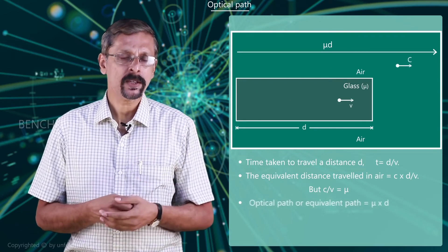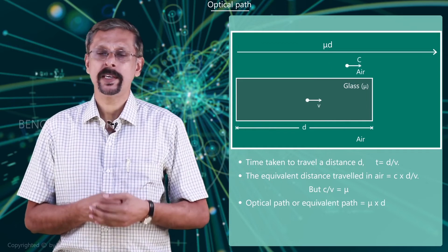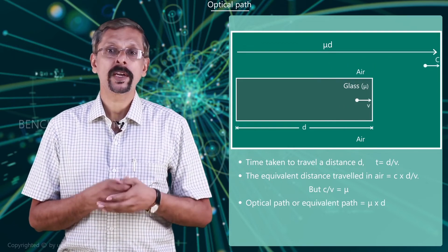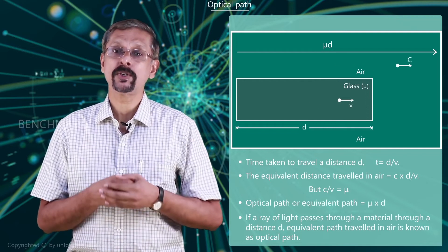Hence the optical path or the equivalent path is equal to mu times d. So if a ray of light travels through a material medium through a distance d,